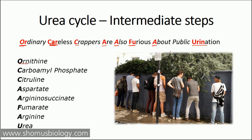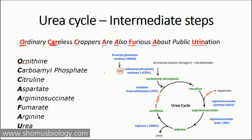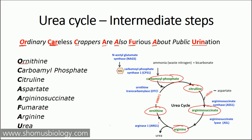If you tally all these details with the actual urea cycle, this is what you get: starting with ornithine, then carbamoyl phosphate, then citrulline, then arginino succinate, then arginine, and then you continue back to ornithine. Aspartate is present somewhere in the middle alongside arginino succinate. Those are the different steps.